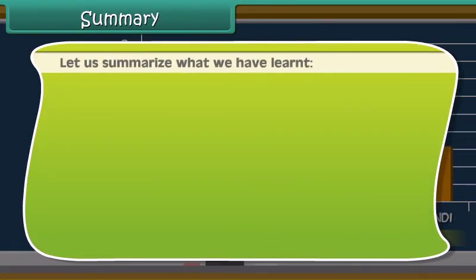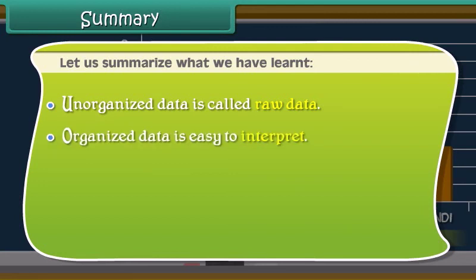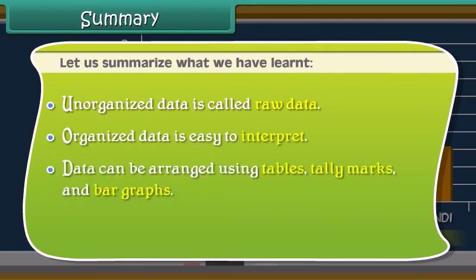Let us summarize what we have learned. Unorganized data is called raw data. Organized data is easy to interpret. Data can be arranged using tables, tally marks and bar graphs.